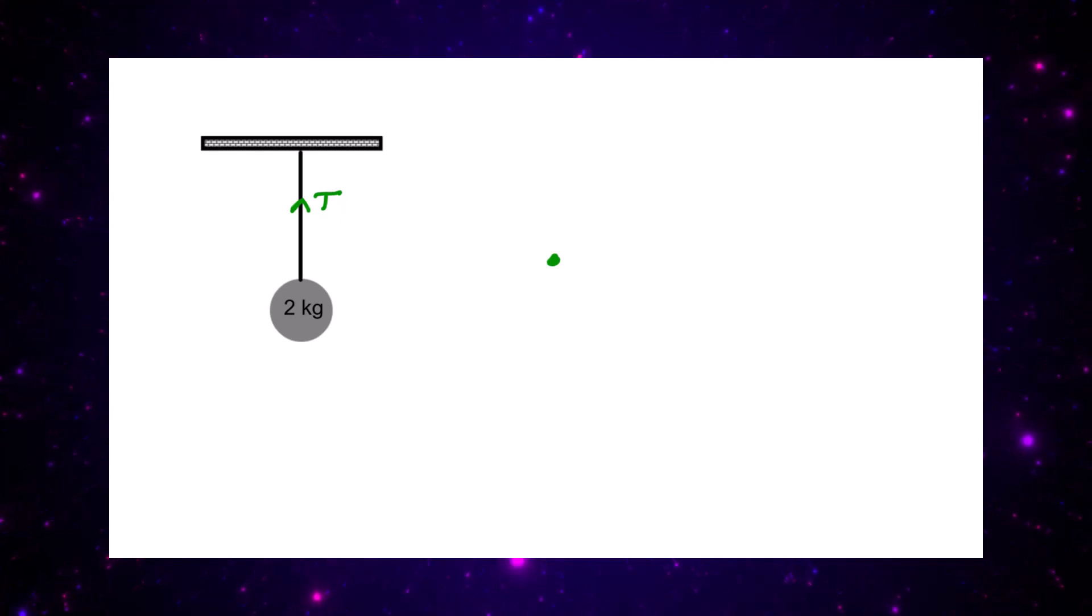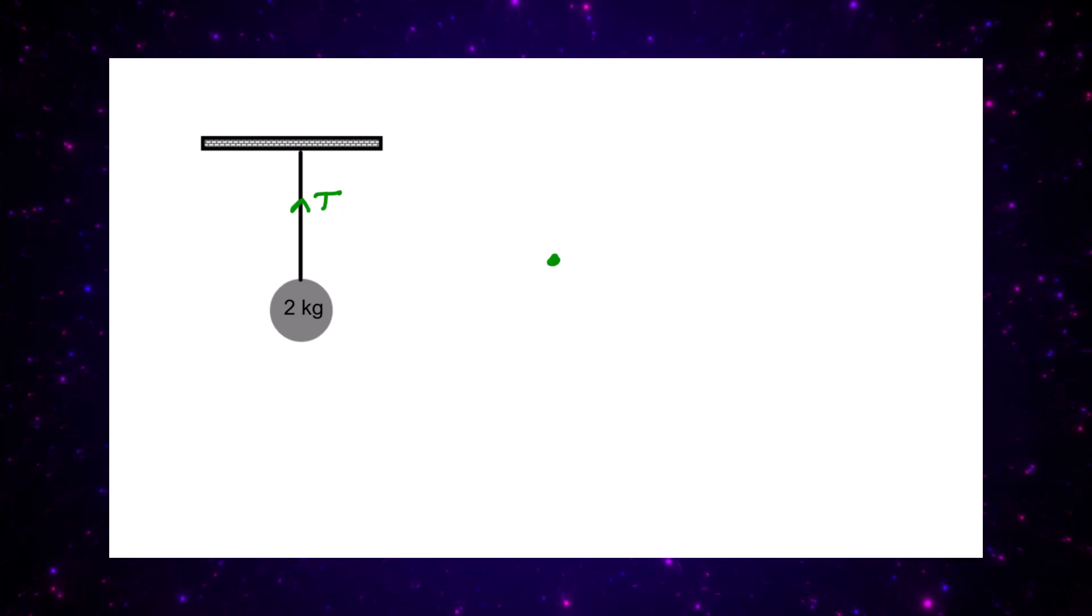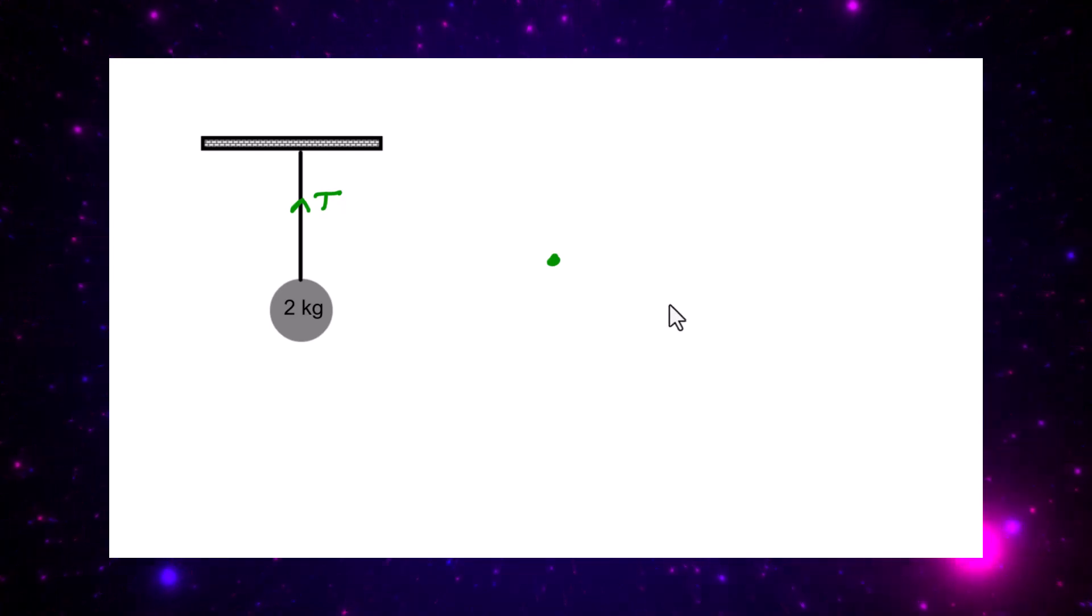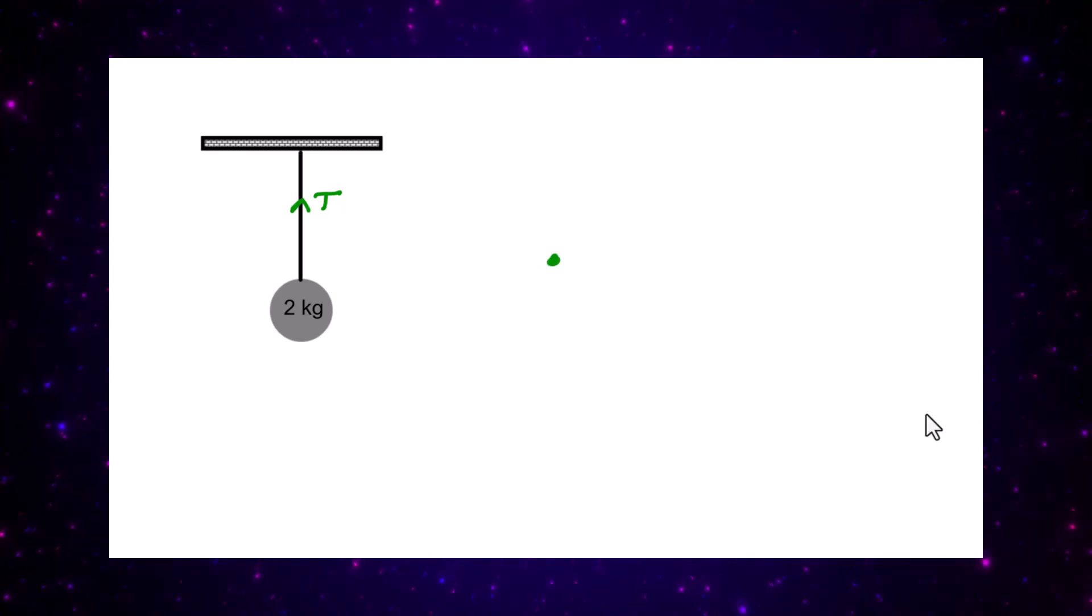Here we have a metal ball of two kilograms hanging from a roof with a massless cord. Our job is to find the tension in that rope. The first thing we do is make a dot in the middle of our page and draw in all the forces.